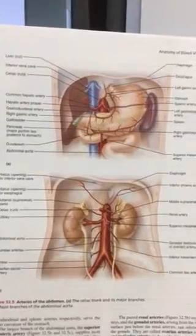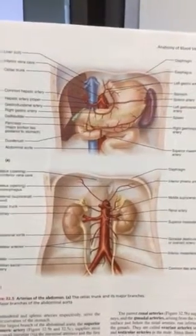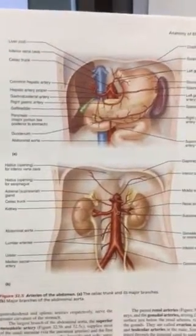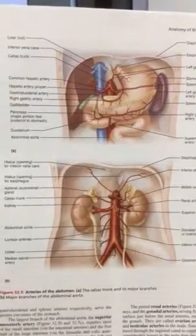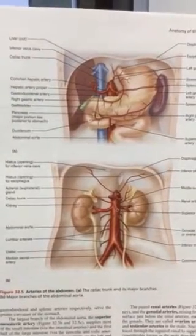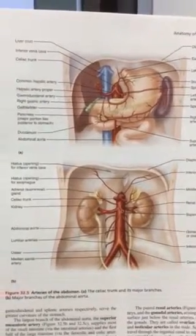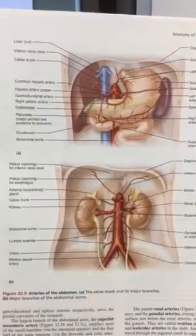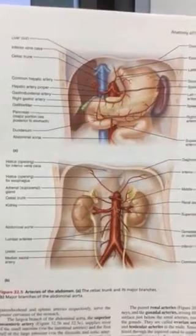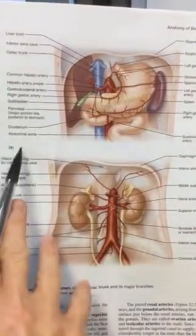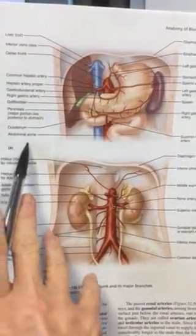If you'll recall, the descending aorta can be renamed depending on the cavity in which it's found. So in the thoracic cavity, we called it the thoracic aorta. Here we can refer to it as the abdominal aorta.